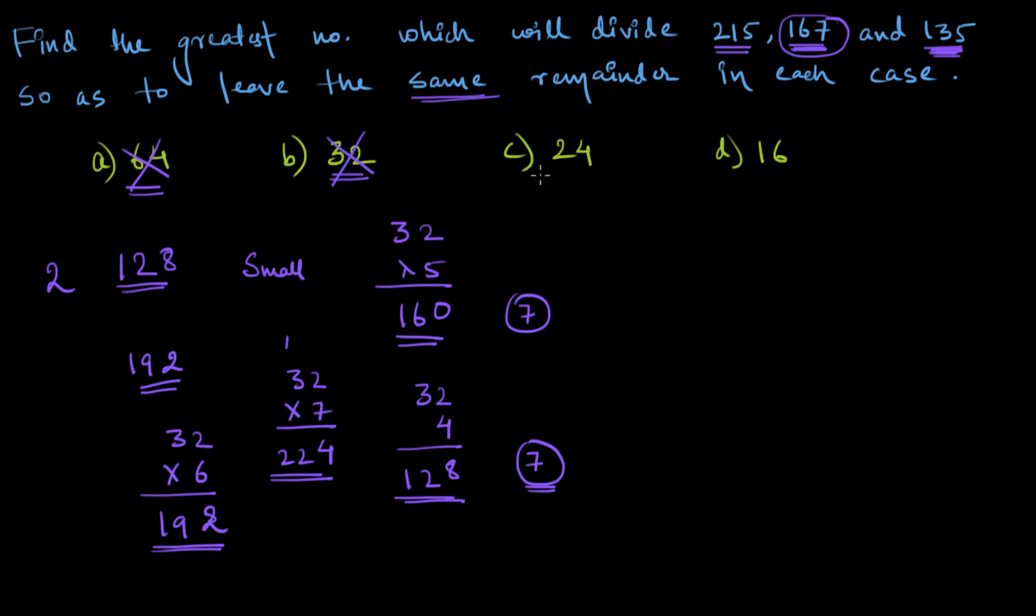What about 24? Let us check for 24. In case of 24, if I multiply 24 with, let's say, 6. 6×4=24, 2 carry, 6×2=12, 14, 144. Not divisible by 135, I have to multiply this by 5.